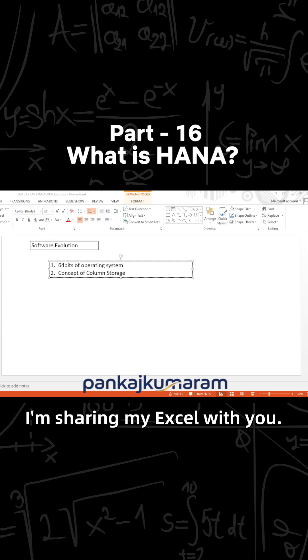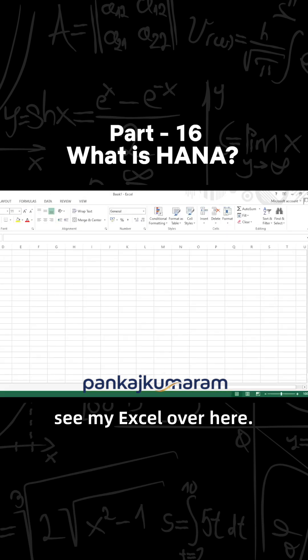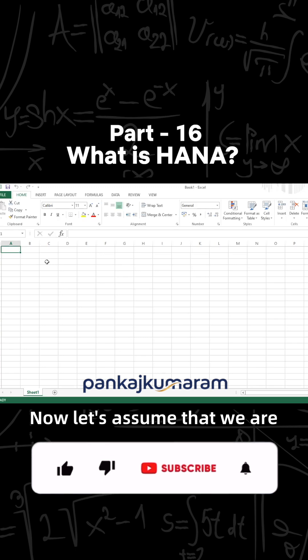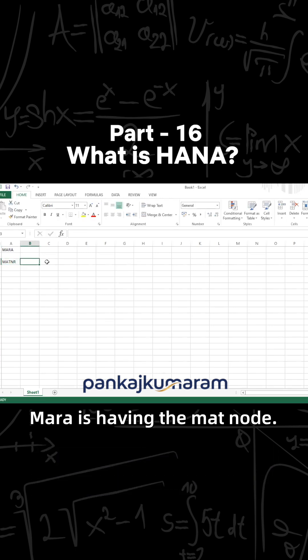I'm sharing my Excel with you. Hope you are able to see my Excel now. Let's assume that we are having the MARA table. Let's add one field over here for material number, and then one more field for material type, and one more field here.